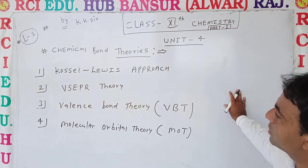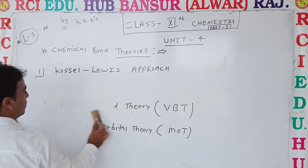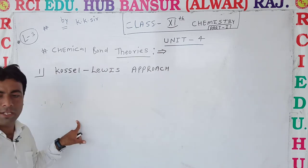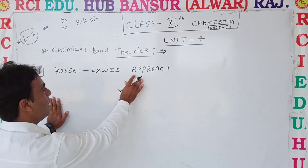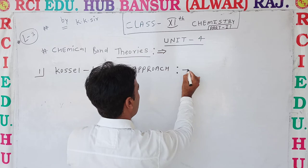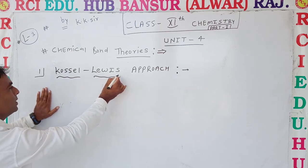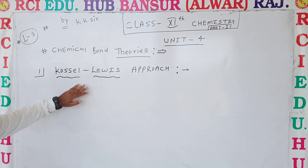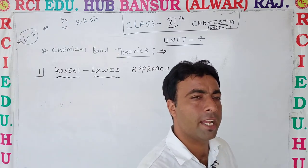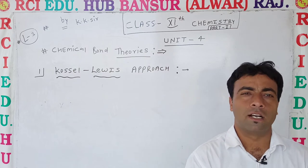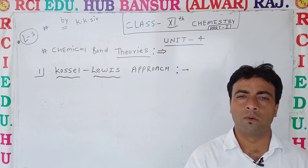First is the Kossel-Lewis approach. Today we start with the Kossel-Lewis approach. We will see each theory one by one in upcoming classes to explain the formation of chemical bonds. In the Kossel-Lewis approach there are two scientists involved: one is Kossel, and the second is Lewis. These two gave the starting concepts of bonds, and it was first given by Kossel and Lewis.